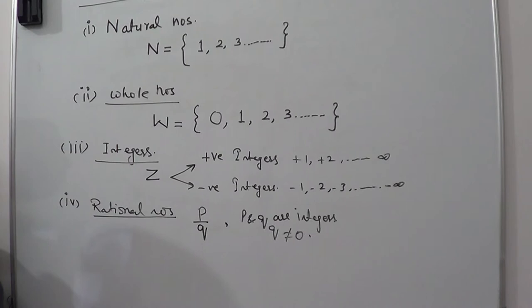Rational numbers, for example, 1 by 2, 3 by 2, 4 by 5. The important thing about rational numbers is their decimal solution is terminating.